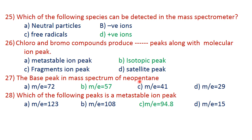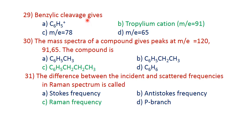The base peak in the mass spectrum of neopentane — the base peak is the peak with 100% intensity. 100% intensity peak is the base peak. Option B. The metastable ion peak: the base peak has 100% intensity; 91 is the peak of the tropylium cation; 29 is the correct answer peak.